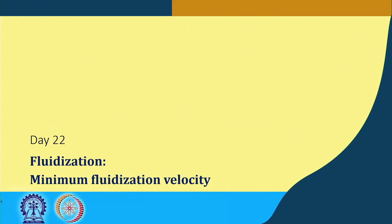We have already understood what is minimum fluidization velocity, what is bed expansion, and how it varies with the gas or fluid velocity. How the pressure inside the bed varies from a fixed bed to the fluidized bed, and how this parameter varies during that transition — that we will see today.